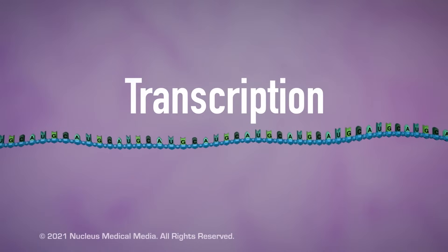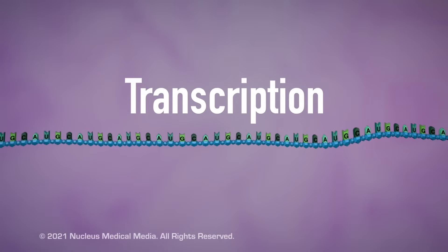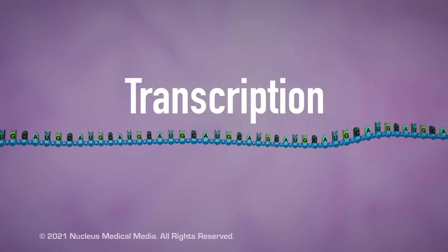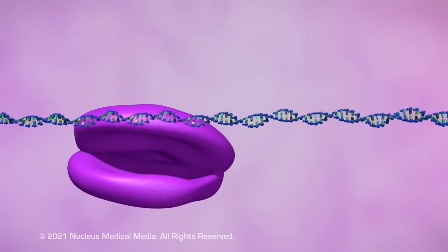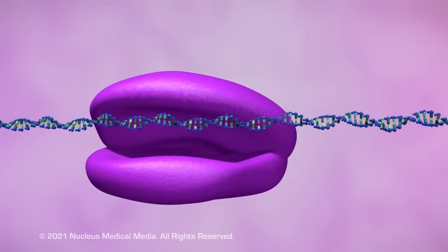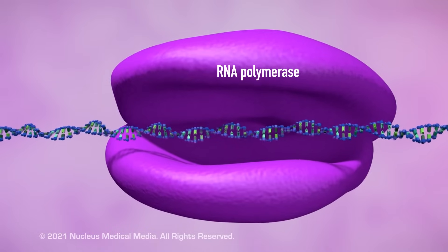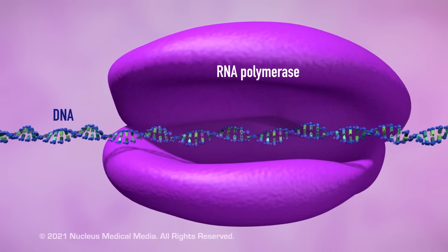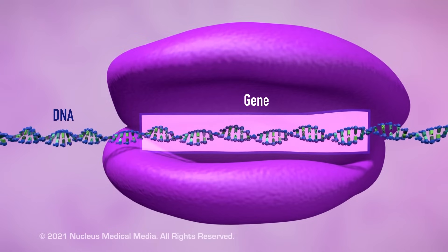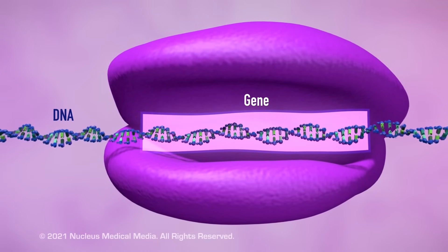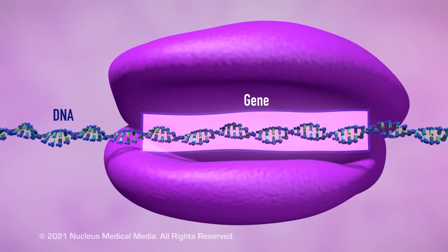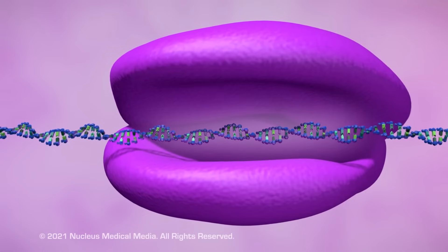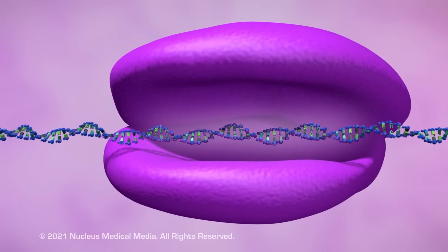Now let's see how transcription happens. Transcription begins when an enzyme called RNA polymerase attaches to a segment of DNA called a gene. A gene contains the code to build a specific protein, which is a macromolecule made up of a sequence of amino acids in a specific order.